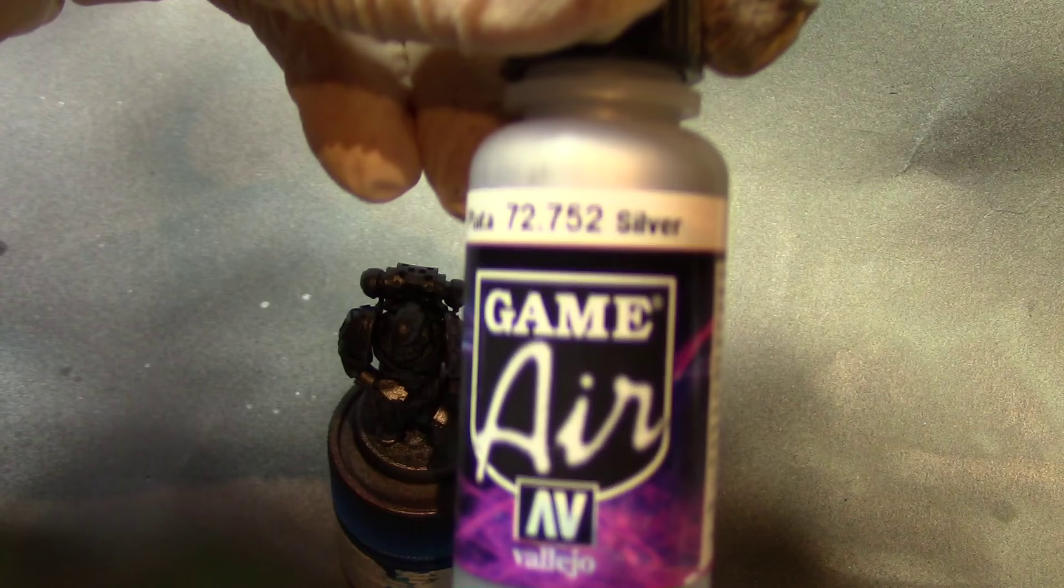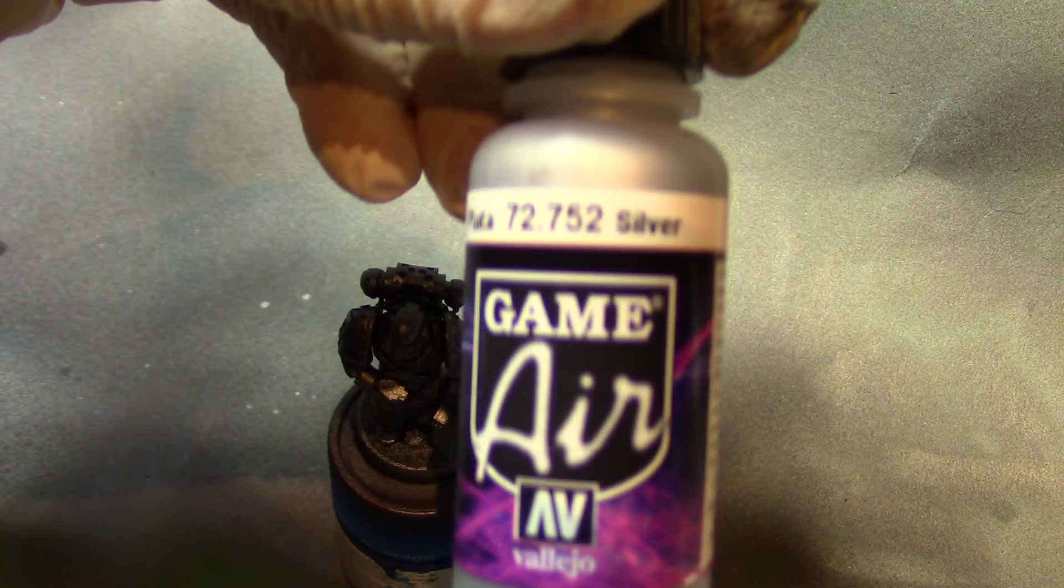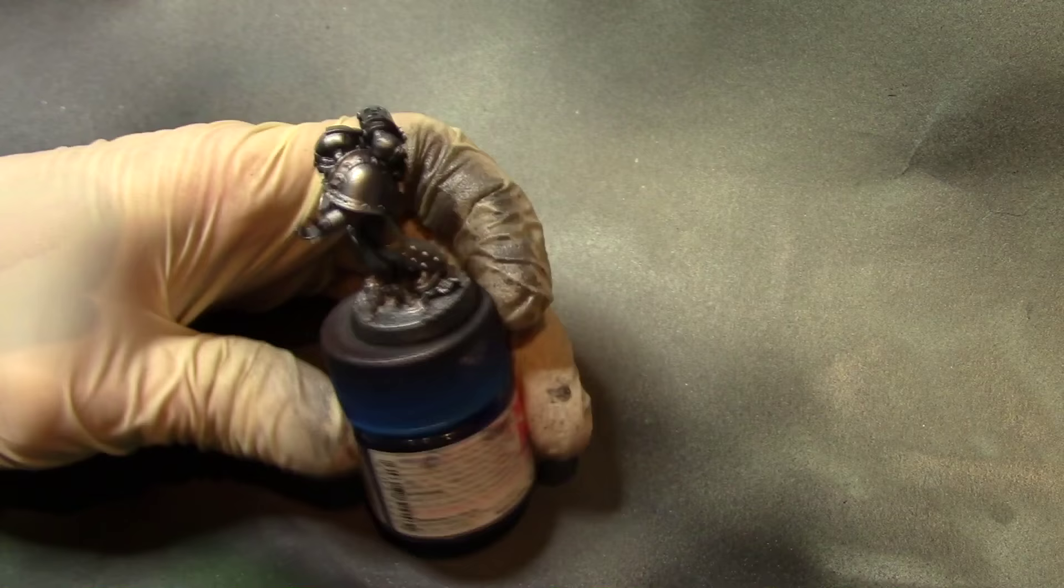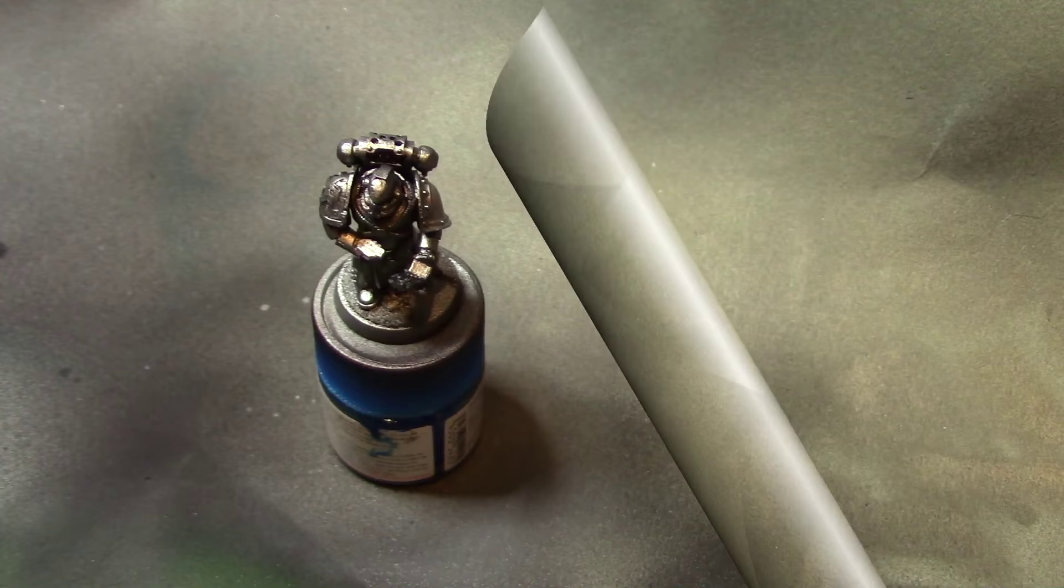Then after that we're going to come in with just silver and we're going to increase the incline of the angle if you will, basically spraying more down rather than horizontal, and focusing more in specific areas where light would catch basically, rather than just all over the place.